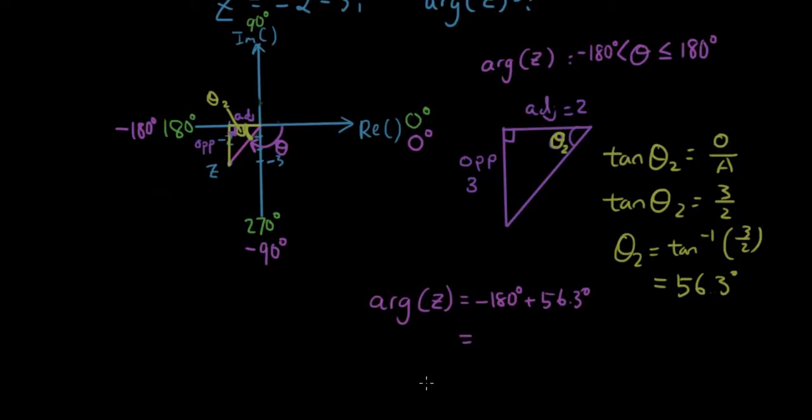And if you put that in your calculator, it's negative 123 degrees. And that is theta. Negative 123.69 degrees.